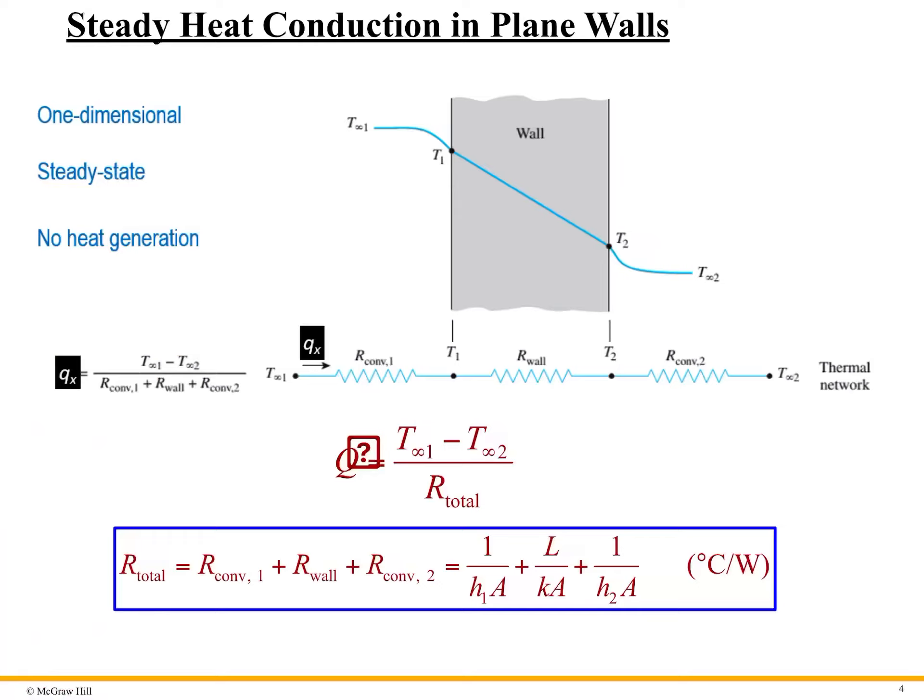You must need to understand this. Here we'll try to develop a thermal resistance network. We know resistance is against conduction or convection, so it prevents the transfer.